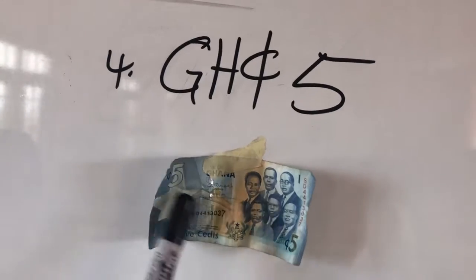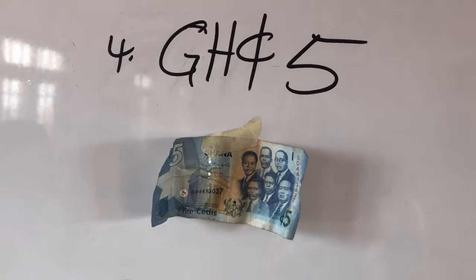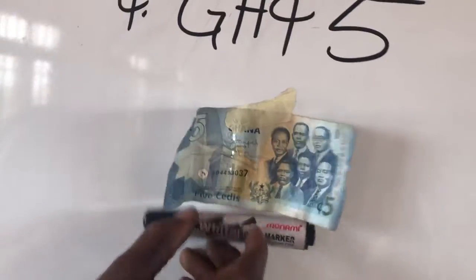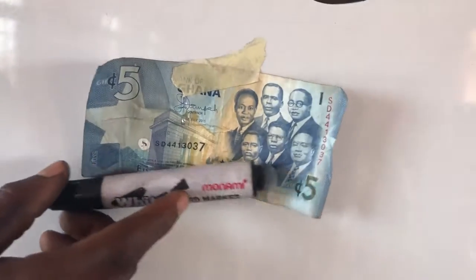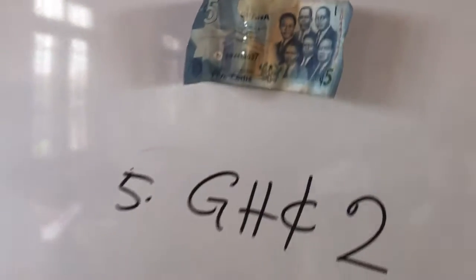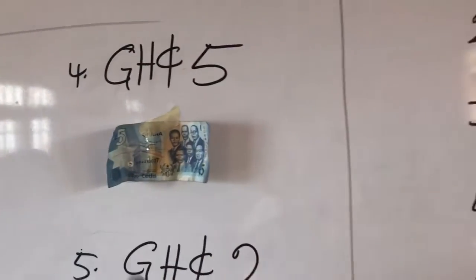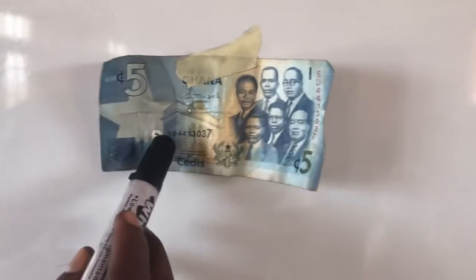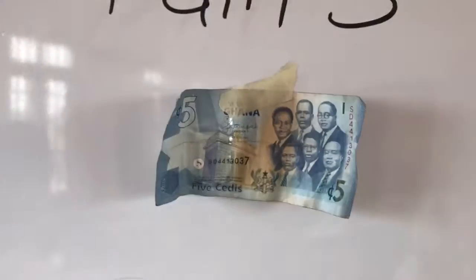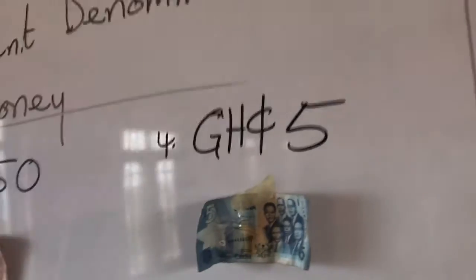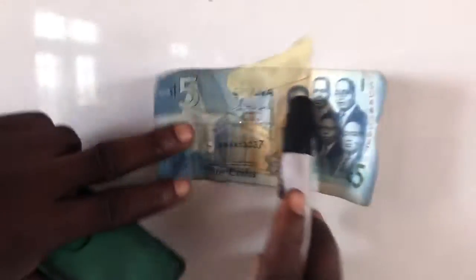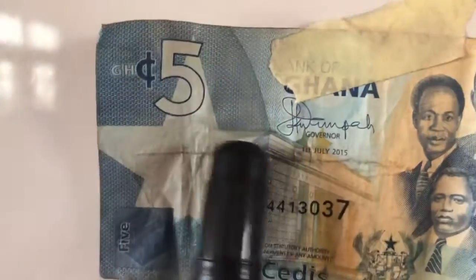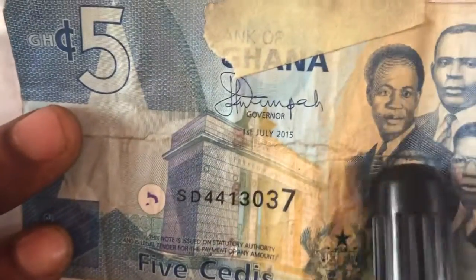Five Ghana cedis. Look at it - the features are still on them. Try to identify the year in which they are issued. Look at the year - it is here: 1st July 2015. This note is dated 1st July 2015.